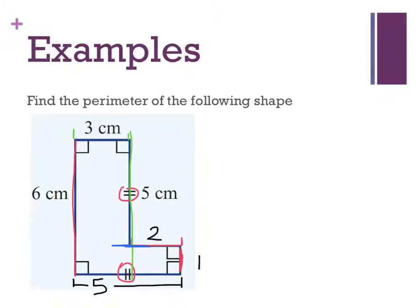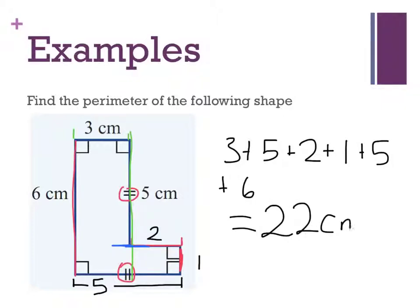So my perimeter is three, five, two, one, five, and six. So three and five is eight. Eight and two is ten. Ten, one, eleven, sixteen, twenty-two. Now all of my units were given in centimetres and the additional calculations I had were in centimetres. So the perimeter of this shape is 22 centimetres.